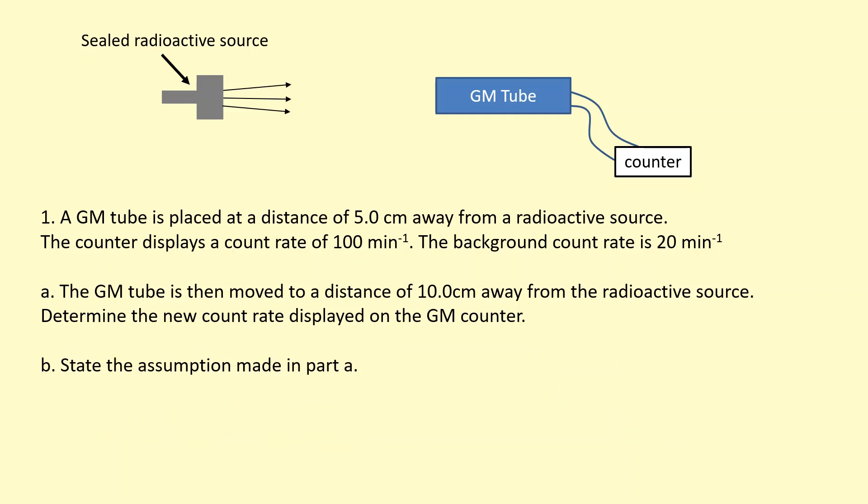In part B of this question, we're asked to state the assumption made when we carried out the calculation in part A. When we did the calculation, we used the inverse square law, and in doing so, we assumed that it's a gamma source that it's emitting in all directions. If it was an alpha or a beta, it won't necessarily follow the inverse square law. So we assumed that it's only emitting gamma and that it's not emitting any alpha or beta.